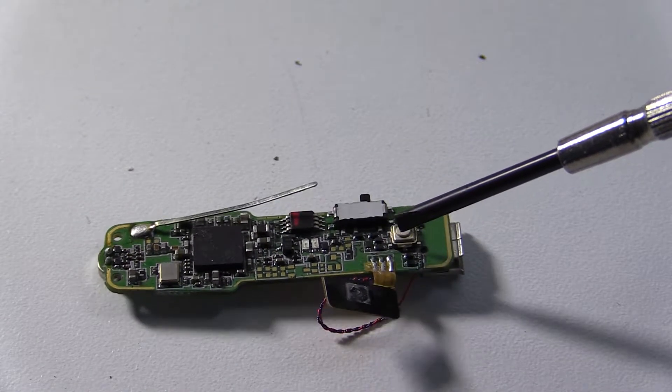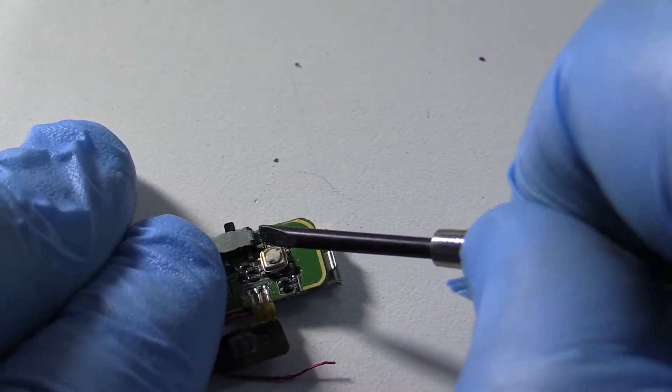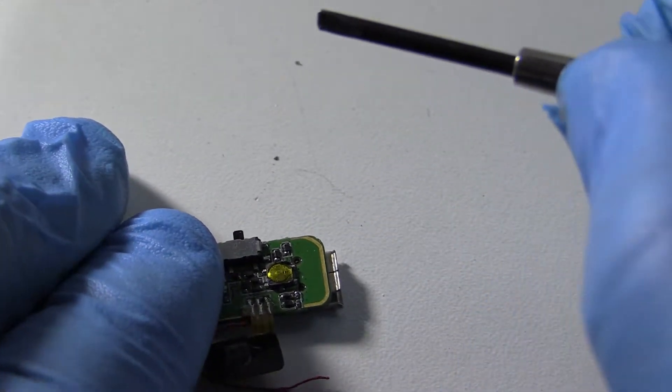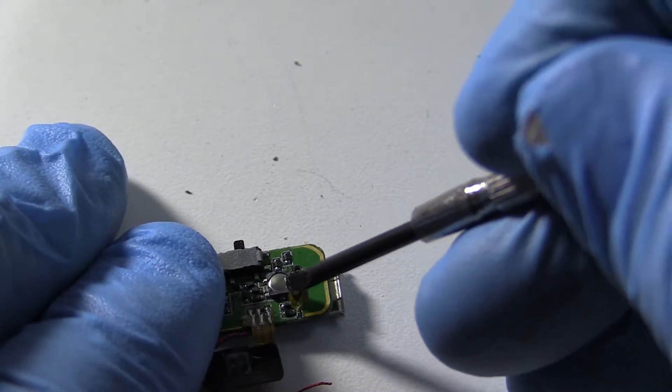Now, any time you see any type of switch, whether it's a push type or slide type, you can guarantee that there's some silver in there. In a switch this size, there's not much, but it's definitely in there.